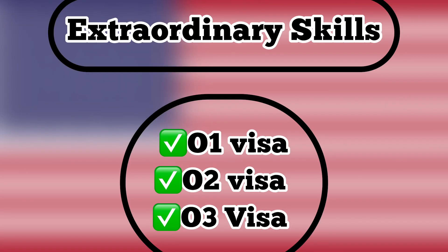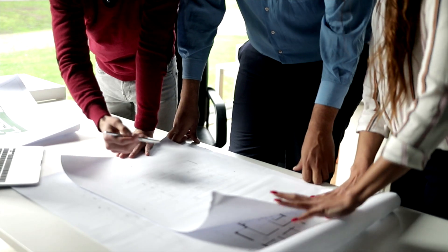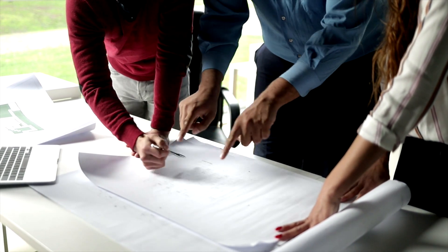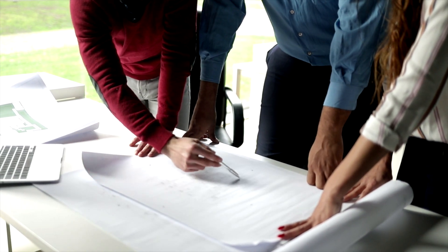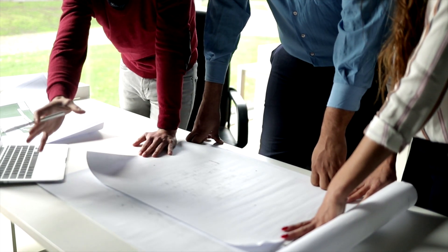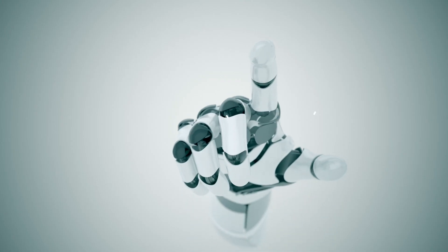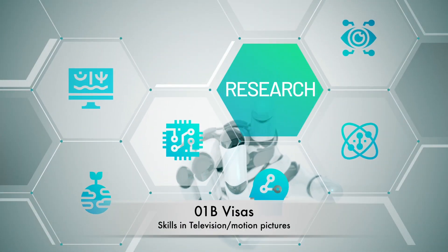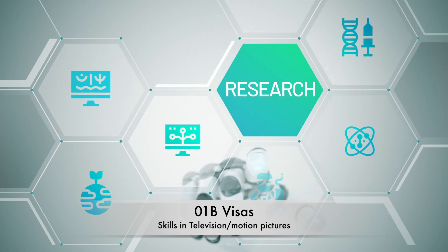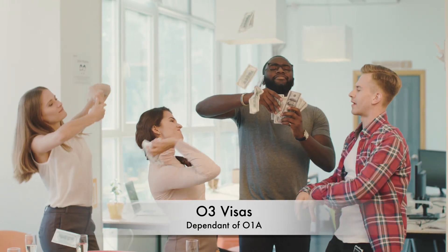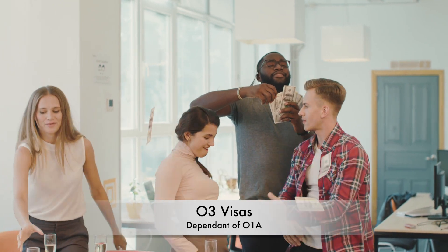The next visa category is the extraordinary skills or ability visa. This group of US non-immigrant visas has been designed for people with extraordinary abilities ranging from business, science, art, education, film, television, and so on. Under this category we have four types. The O1A visa is focused on people with extraordinary abilities in the field of business, athletics, education, IT, and science. The O1B visa is for people who have shown extraordinary abilities in television and film. The O2 visa is for the assistance of those occupying the O1A or O1B visa holders. The O3 visa is for the spouse or children of O1A, O1B, and O2 visa holders.